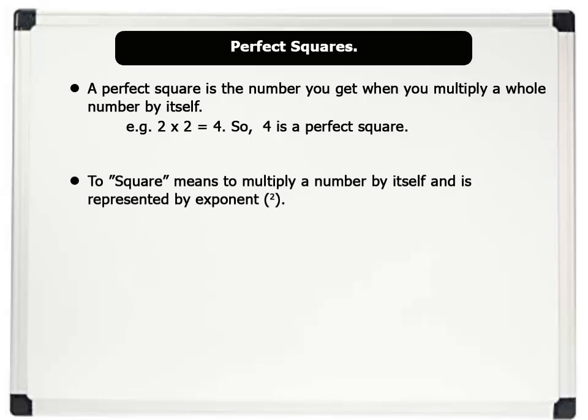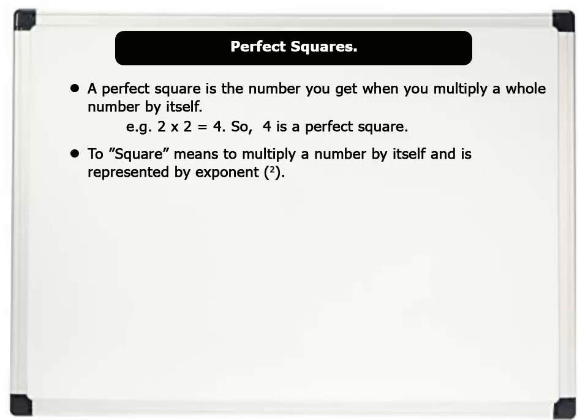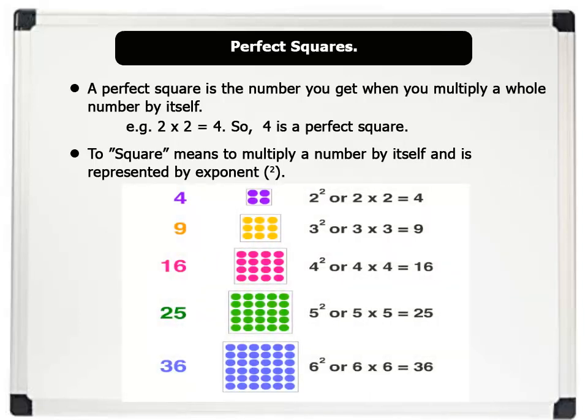Note that, to square means to multiply a number by itself, and is represented by the exponent power 2. In the image on the board for example, 2 power 2, or 2 squared, means 2 times 2, which equals 4.